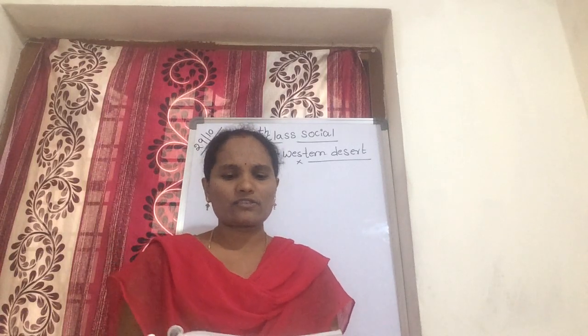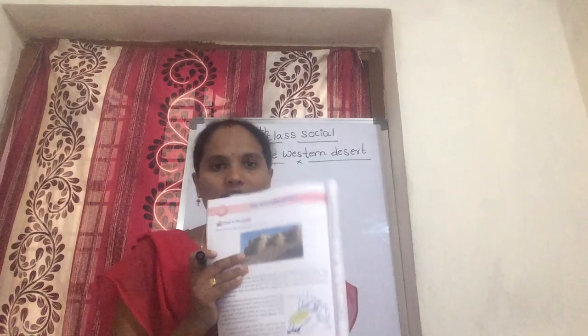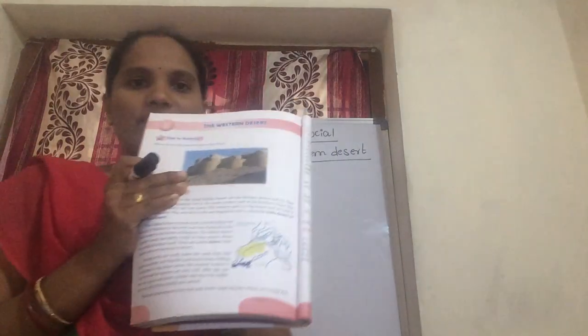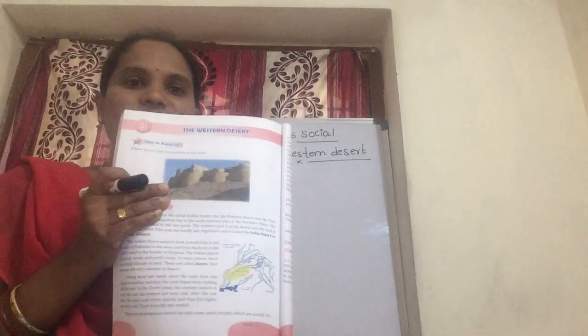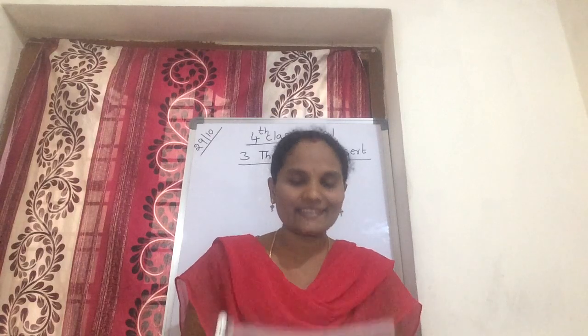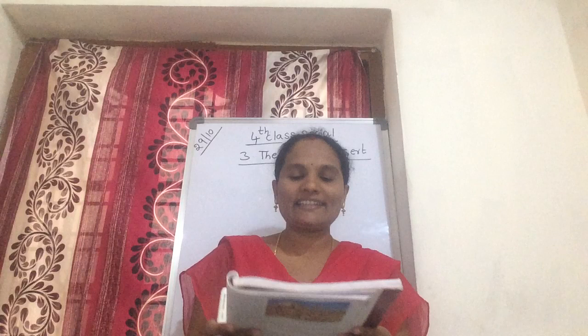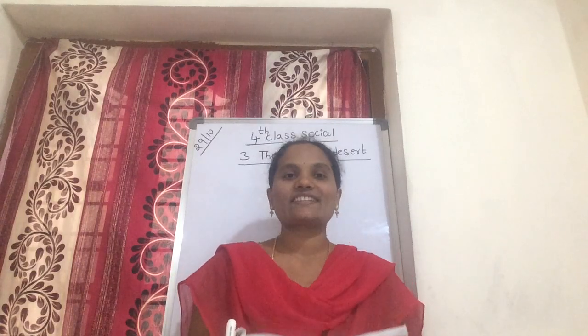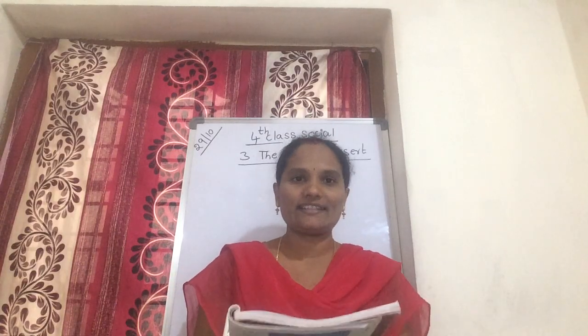Where do you find this kind of construction? Look at this one. Let's start the lesson. The other names for the Great Indian Desert are the Western Desert and the Tahira Desert. What is that other name? The Western Desert and the Tahira Desert.